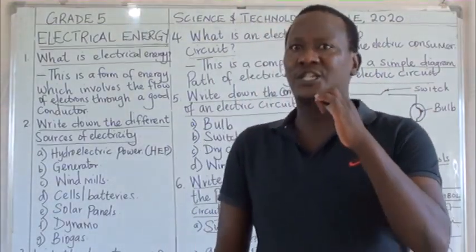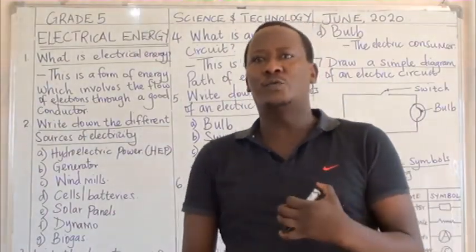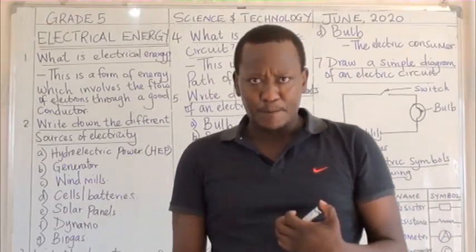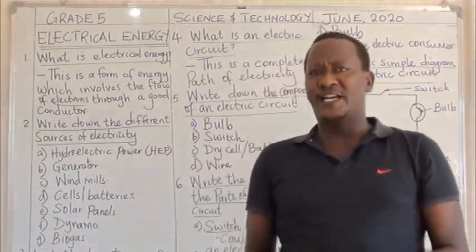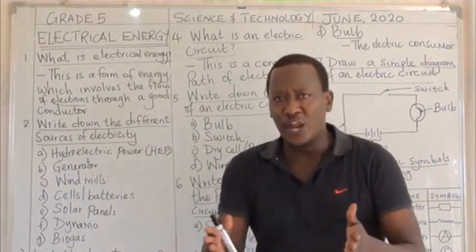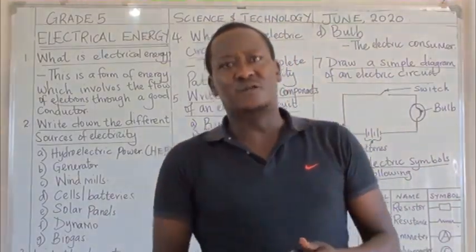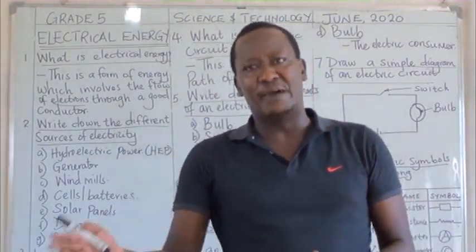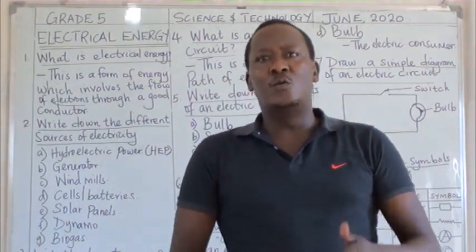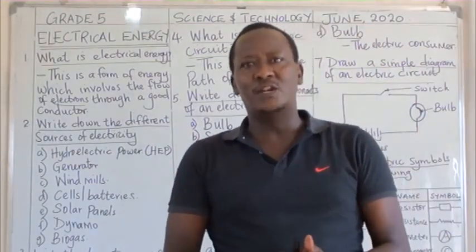These electrons flow in what we call a good conductor of electricity. When we say a good conductor of electricity, if you can refer back to grade 4 when you discussed about electrical energy, you were given different examples of good conductors of electricity like metal, like any liquid, we have the human body, we have plants that are wet.